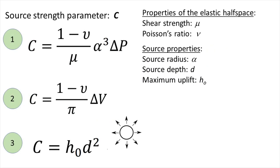The source strength parameter c depends on the properties of the source and the host space, as shown in this figure under equations. Equation number 1 in the figure shows how the source strength scales with the source properties, the applied pressure change times the radius of the source to the third power, as well as properties of the elastic material, its shear modulus denoted with the Greek letter mu, and its Poisson's ratio denoted by the Greek letter nu.